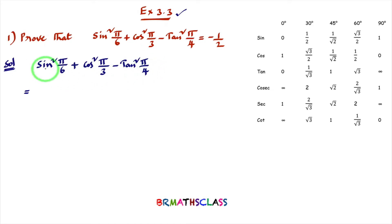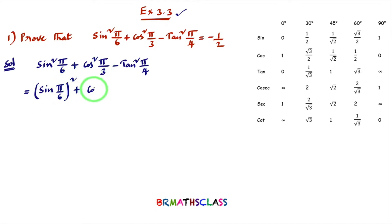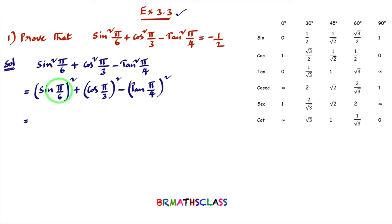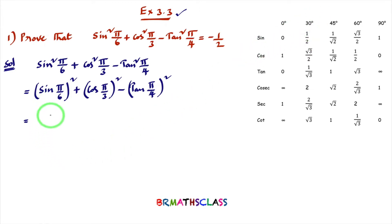In trigonometry, sin² θ means sin θ whole square. So sin²(π/6) can be written as (sin π/6)², plus (cos π/3)², minus (tan π/4)². Now, sin(π/6) means sin 30°, whose value is 1/2. So sin(π/6) = 1/2, and we write (1/2)².